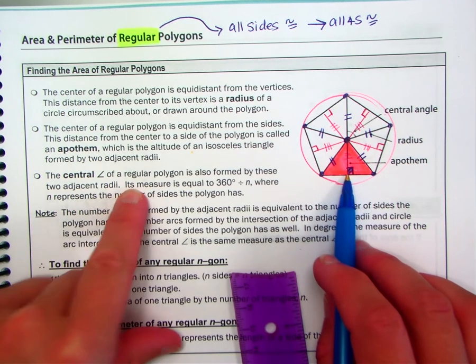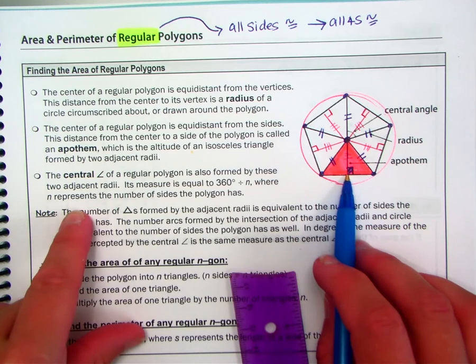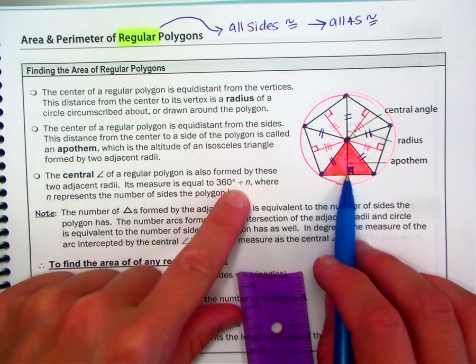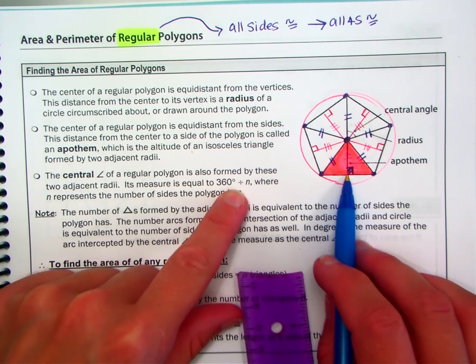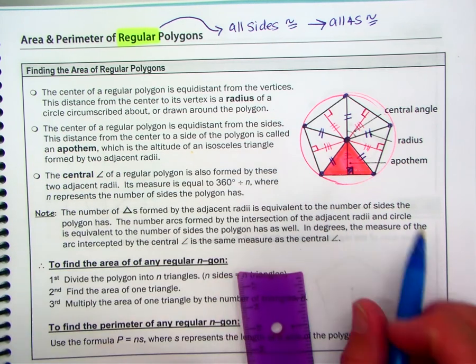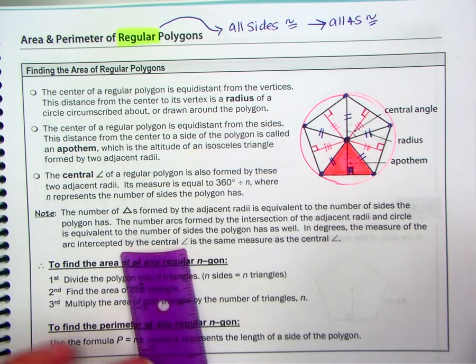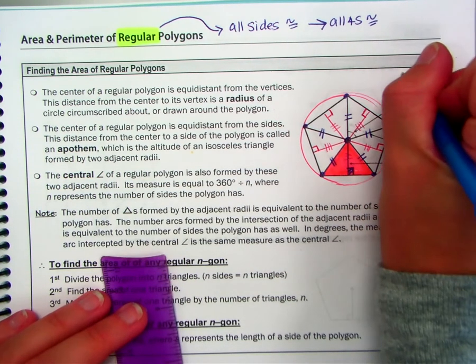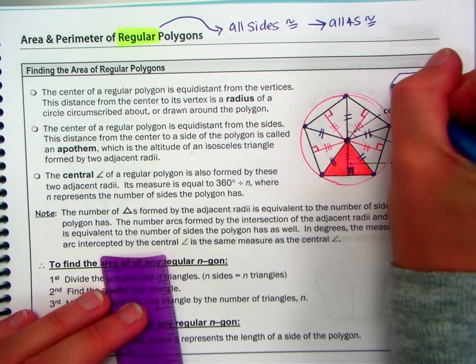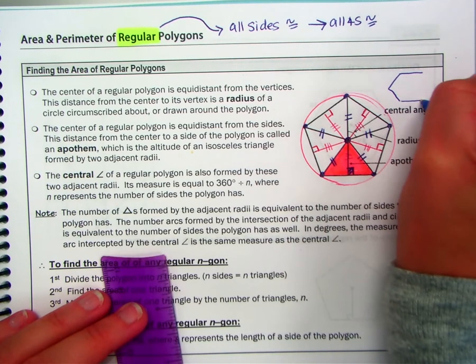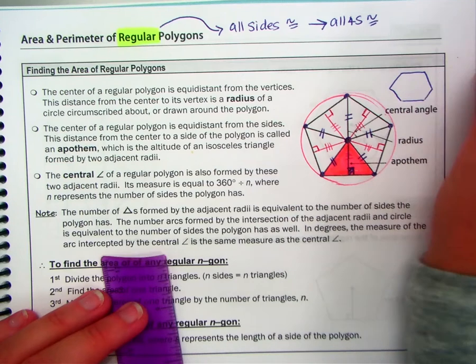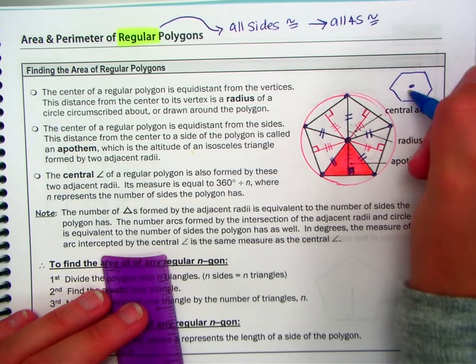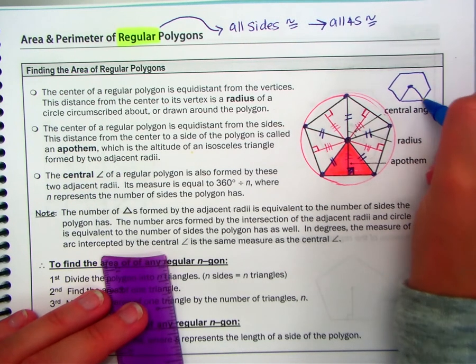The center of a regular polygon is also formed by these two adjacent radii. Its measure is 360 over n. So the best way to represent this is, say, let's sketch a hexagon up here. You can do your best to make it regular. So here's the center. We draw our six triangles.